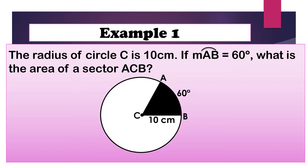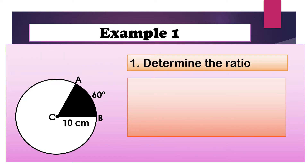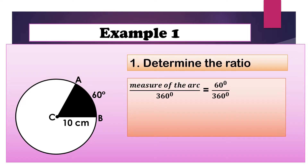Let us have example number 1. The radius of circle C is 10 cm. If the measure of arc AB is equal to 60 degrees, what is the area of sector ACB? Step 1, we will determine the ratio. The formula for the ratio is measure of the arc over 360 degrees. The measure of the arc is 60 degrees, so we substitute: 60 degrees over 360 degrees.